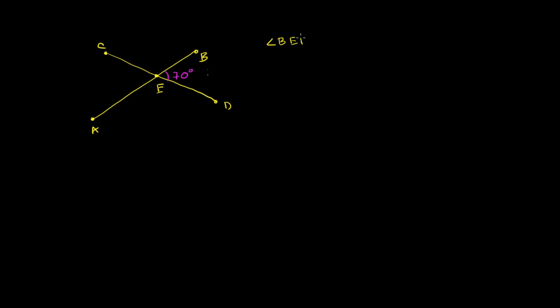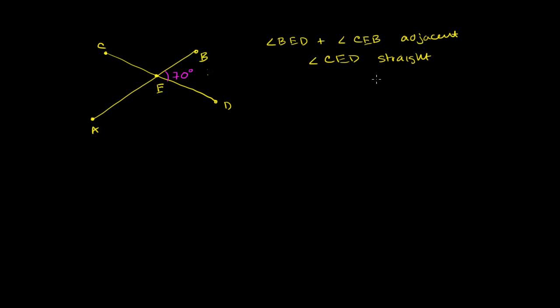The first thing you might notice when you look at this is that angle BED and angle CEB are adjacent. And we also see that if you take the outer sides of those angles, it forms a straight angle. We also see that angle CED is a straight angle. So we know that these two angles must also be supplementary — they're next to each other, and they form a straight angle when you take their outer sides.